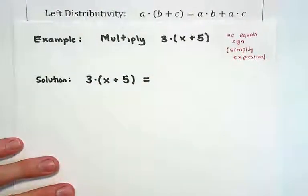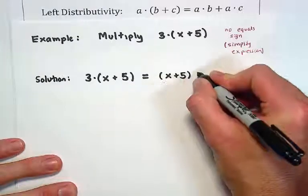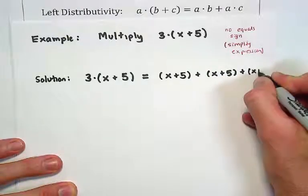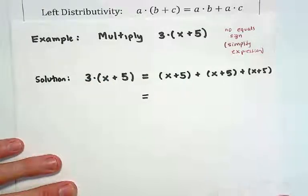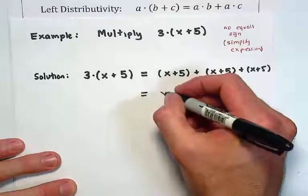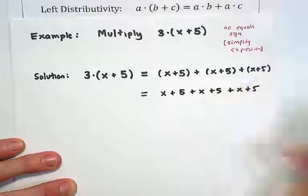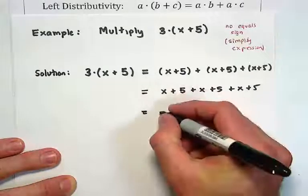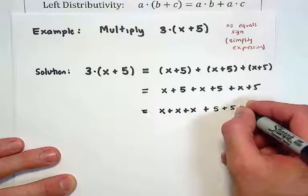Remember that multiplication counts the number of additions. In this situation we're going to take x plus 5 and add that to itself 3 times. Because I'm told multiply by 3, I add this expression to itself 3 times. Here we've associated the groups of 2 together, but we know that in addition we can associate any way that we'd like. Addition is also commutative, so we can bring all the x's out in front.